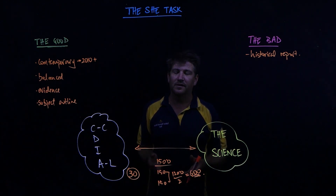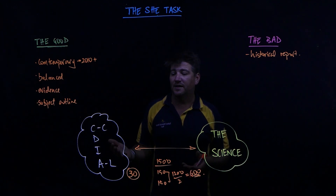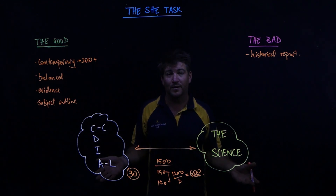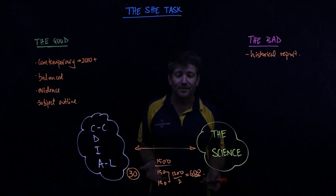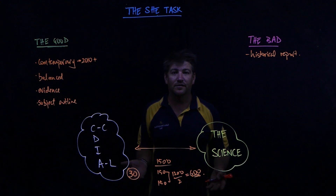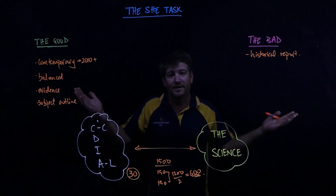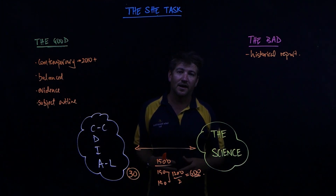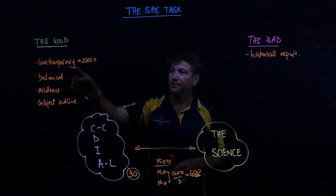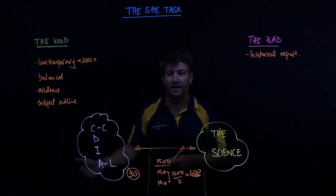Look at something that's happening in the world in the last decade — even in the last six months. At the start of 2020 we had a whole bunch of bushfires that have been exacerbated by the compounding effects of global warming due to excess greenhouse gas emissions. If you were looking at a contemporary chemistry-based issue, you could look at greenhouse gas emissions in that context.